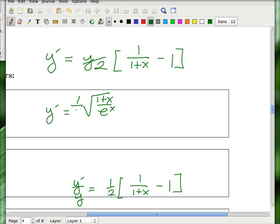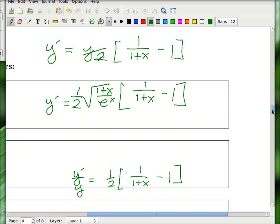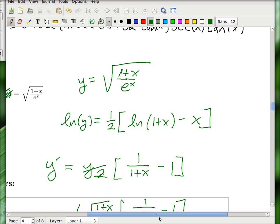So here's this stuff. 1 over 1 plus x minus 1. So that is also the right answer. So the right answer three ways for the chain rule question.